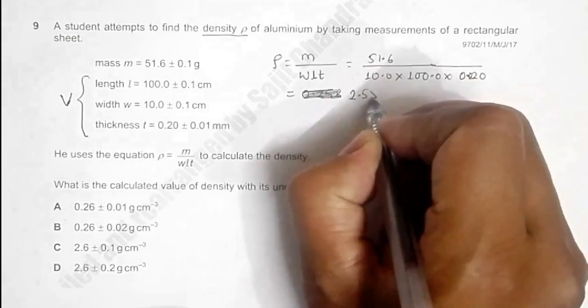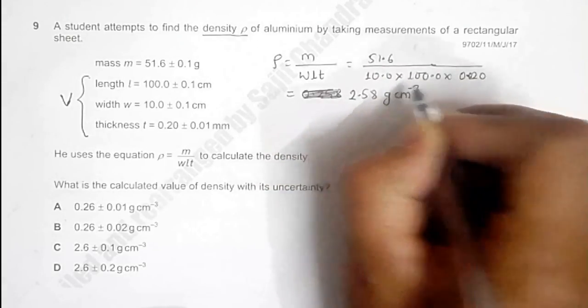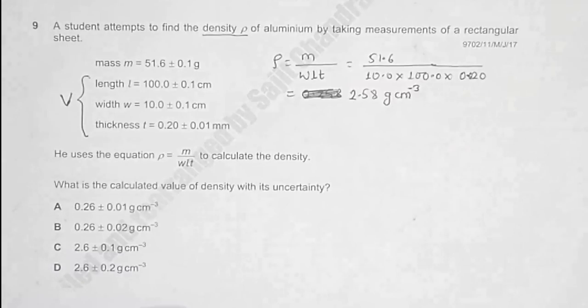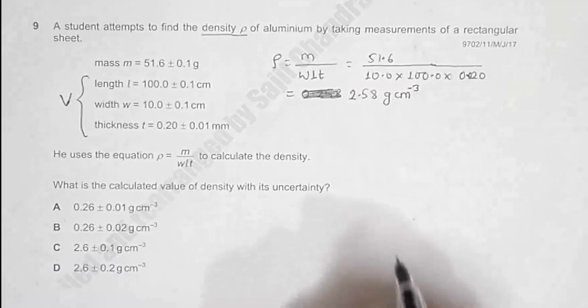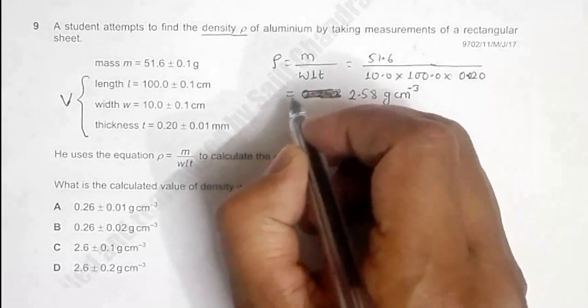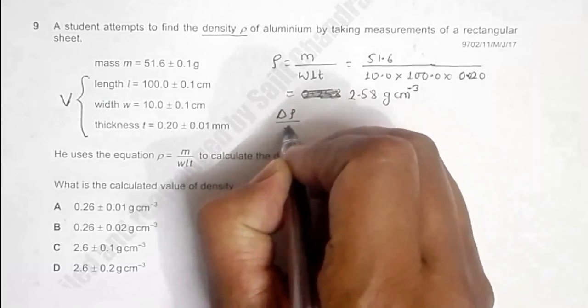2.58 g/cm³. The value is almost compatible with the standard value. Then we need to find the uncertainty. This is given by the fractional uncertainty in the density, which is equal